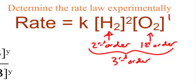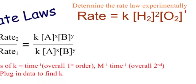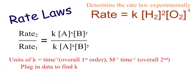To figure out the orders from an initial rates experiment, you take two different experiments, look at their rates, and see how they changed. Did the rate double? Is it zero, first, or second order? You keep one variable constant while the other changes, so you can isolate the order of each reactant.